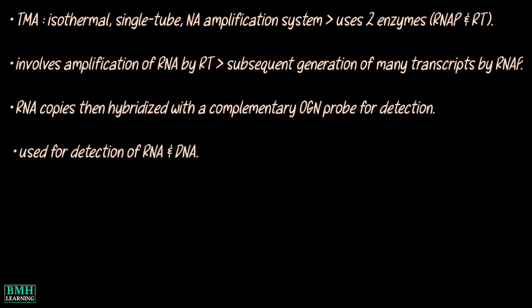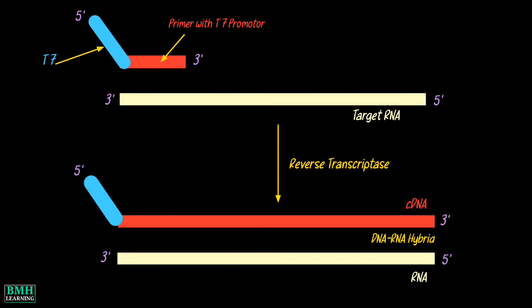Though primarily used for RNA detection, DNA can also be used as a starting material. Primers are designed to target a region of interest, but importantly one primer includes the promoter sequence for T7 RNA polymerase at the 5' end.